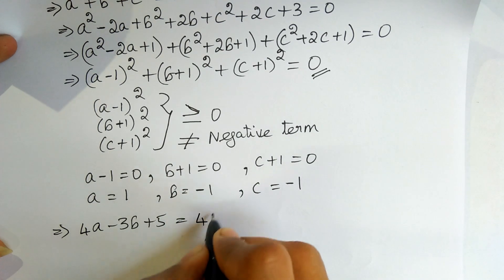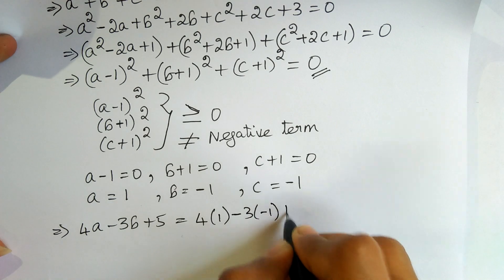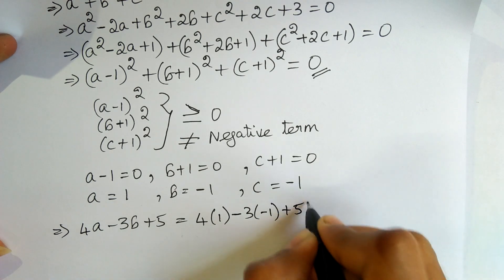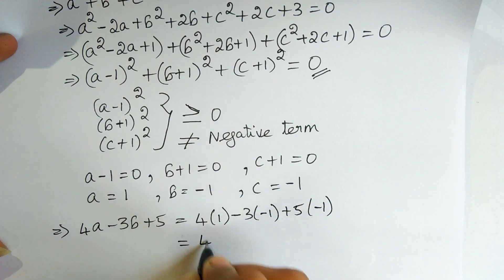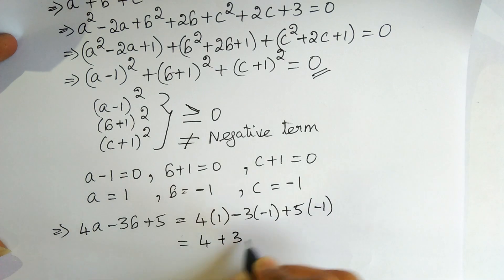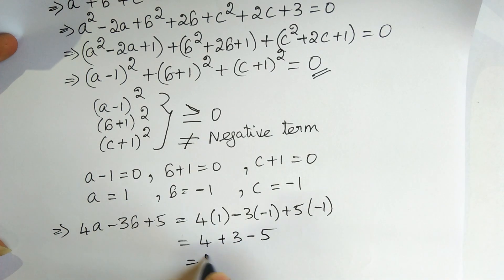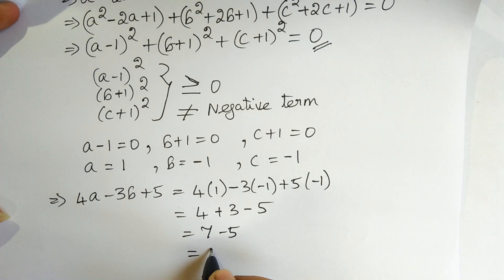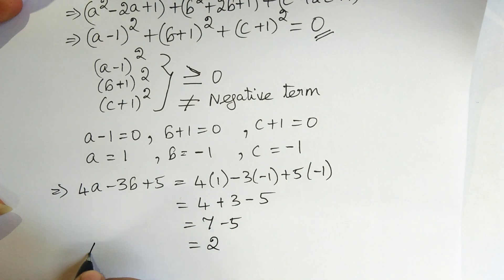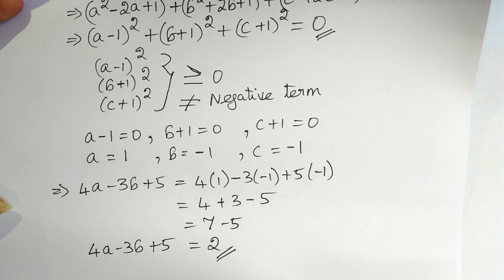4(1) - 3(-1) + 5(-1) = 4 + 3 - 5 = 7 - 5 = 2. Therefore the value of 4a - 3b + 5c = 2.